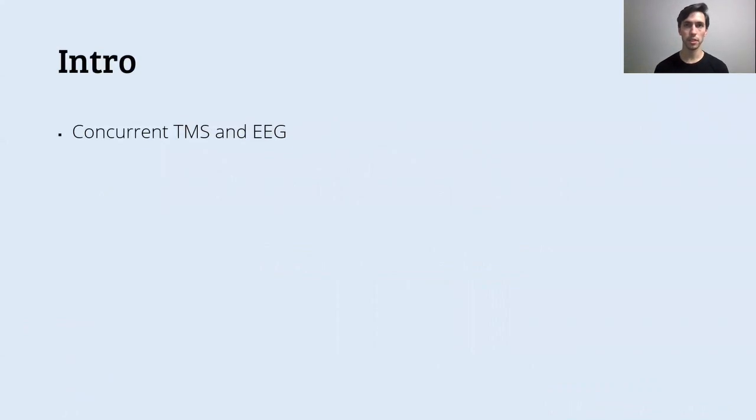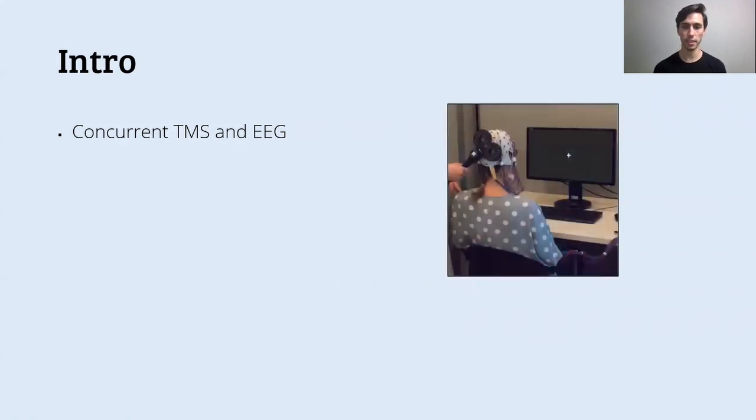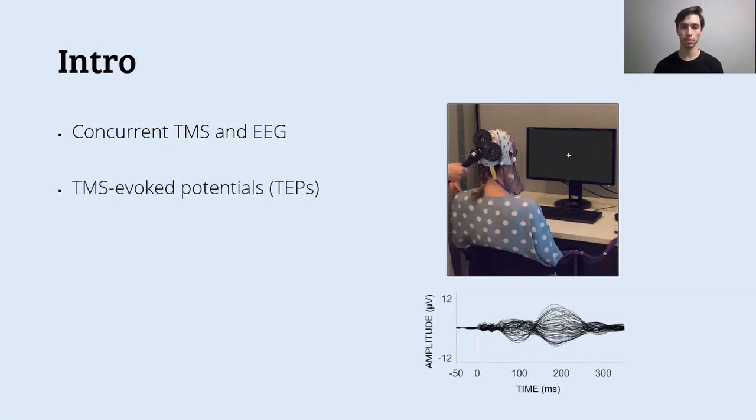Concurrent TMS EEG is a combination of transcranial magnetic stimulation and electroencephalography, and it allows to stimulate a small area of the cortex using the TMS and to record how the signal spreads through the cortex with EEG. Here's an example of an experimental setting of a TMS EEG experiment, and what you usually get from a TMS EEG experiment is called a TMS-evoked potential, a TEP, which is conceptually equivalent to an ERP.